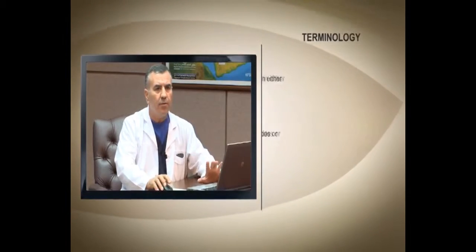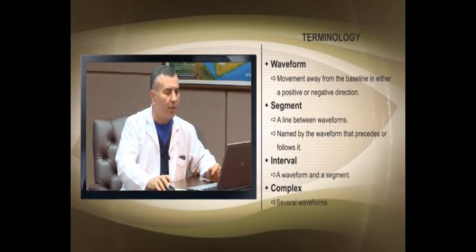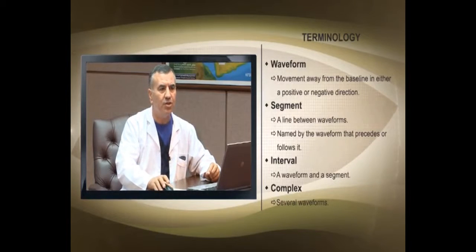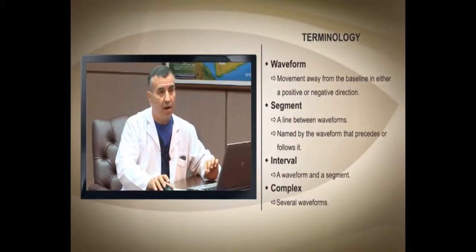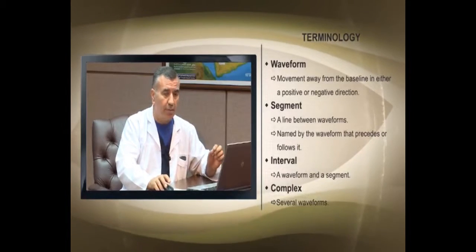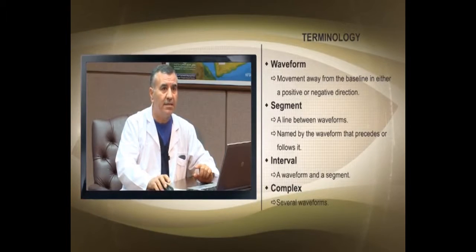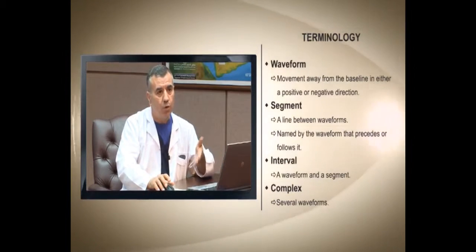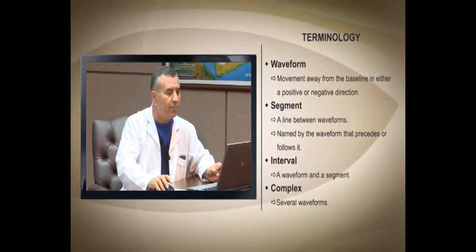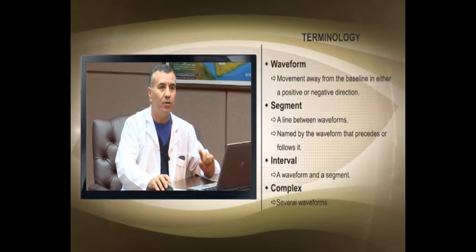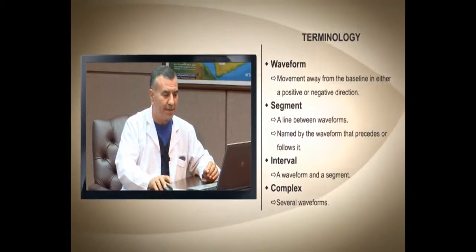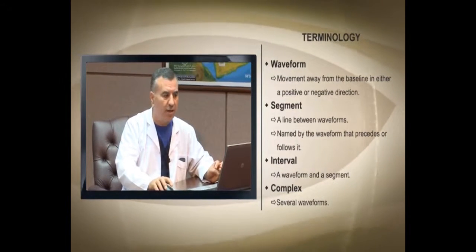In ECG terminology, a wave is a movement away from the baseline — the isoelectric line indicating zero electrical activity. A segment is the line between two waves. An interval is from the beginning of one wave to the beginning of the next, including the wave and the segment after it. A complex is several waves together — the P, Q, R, S, and T waves combined. If there are additional waves, this constitutes a complex.